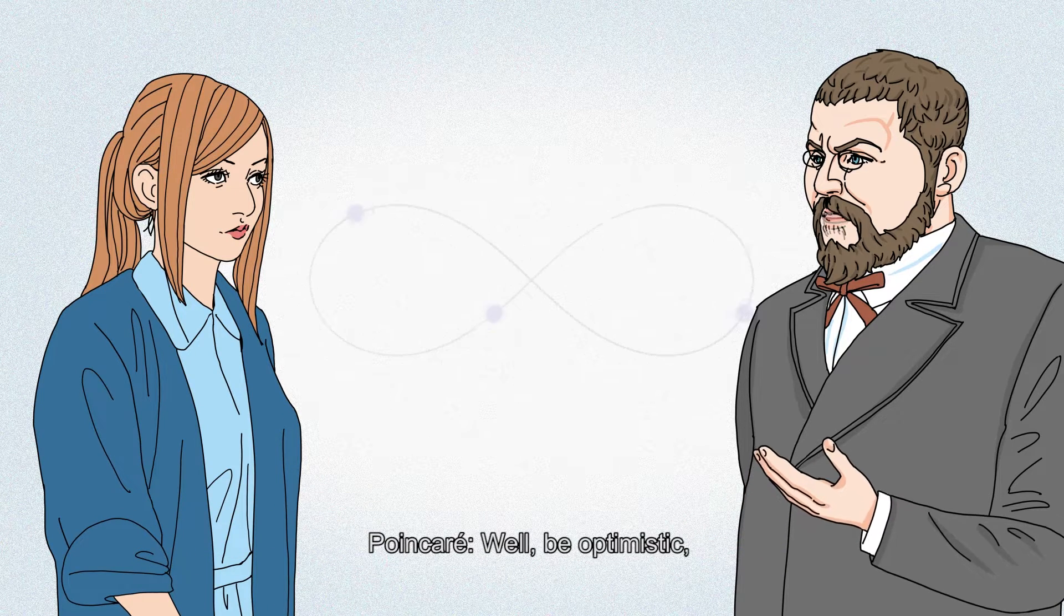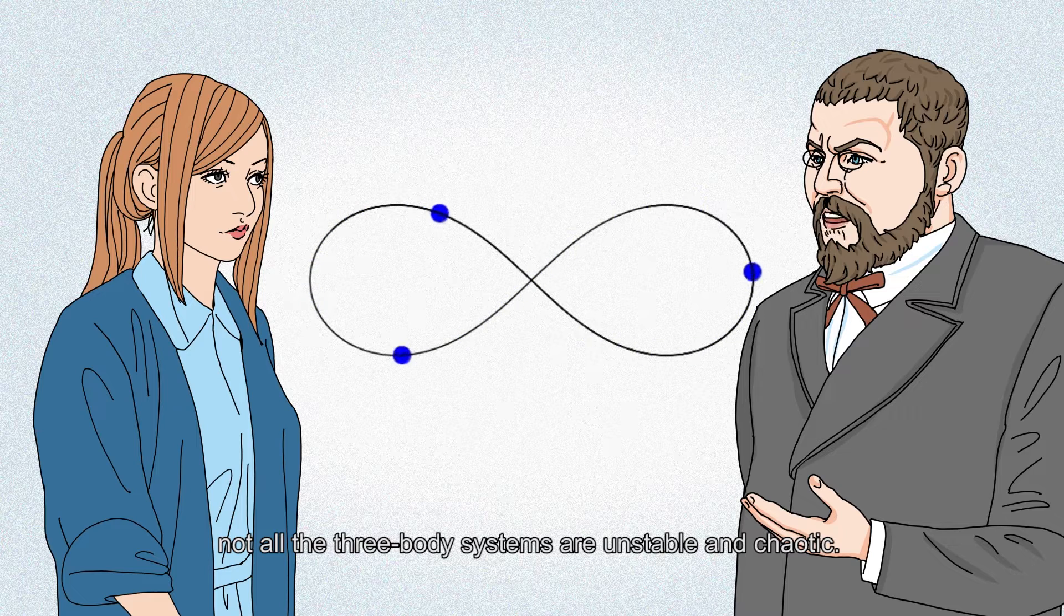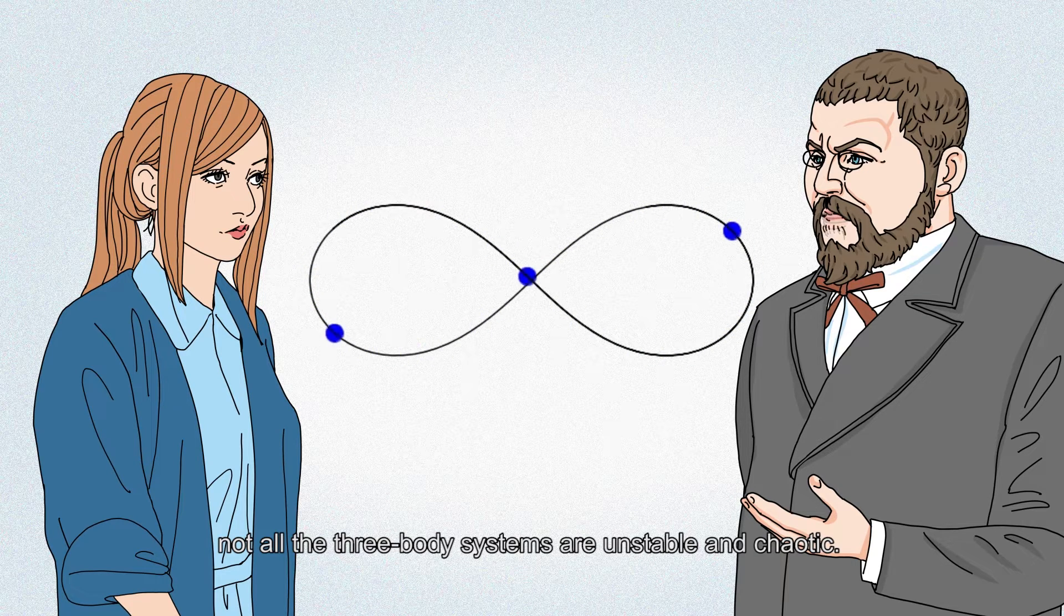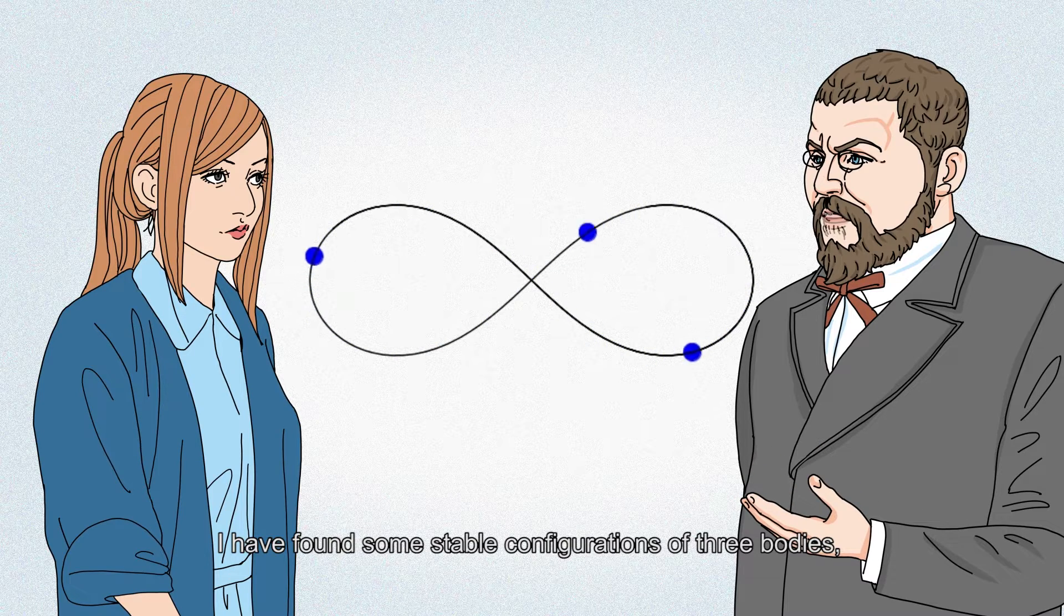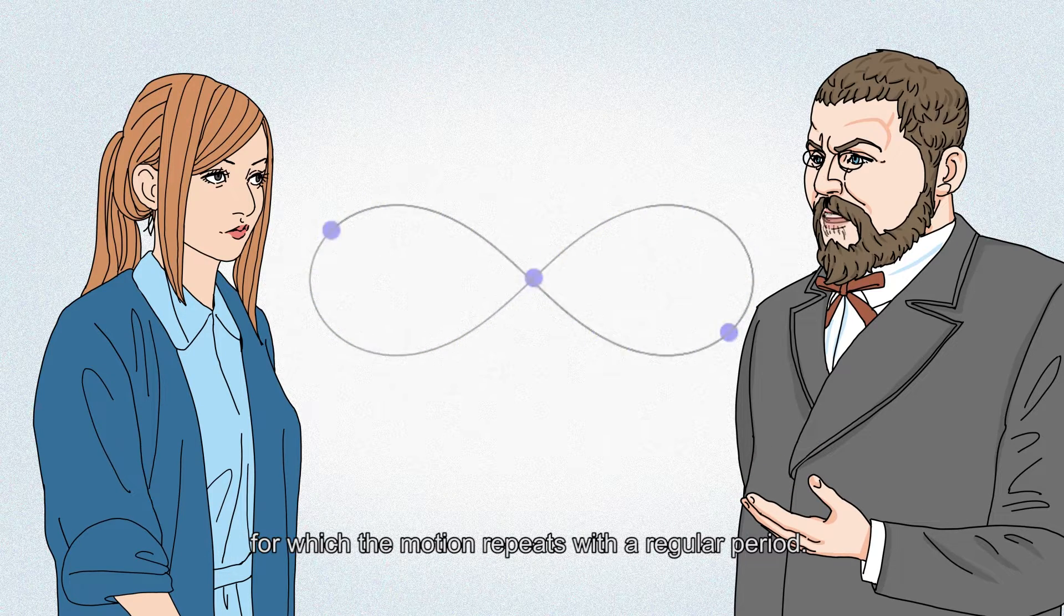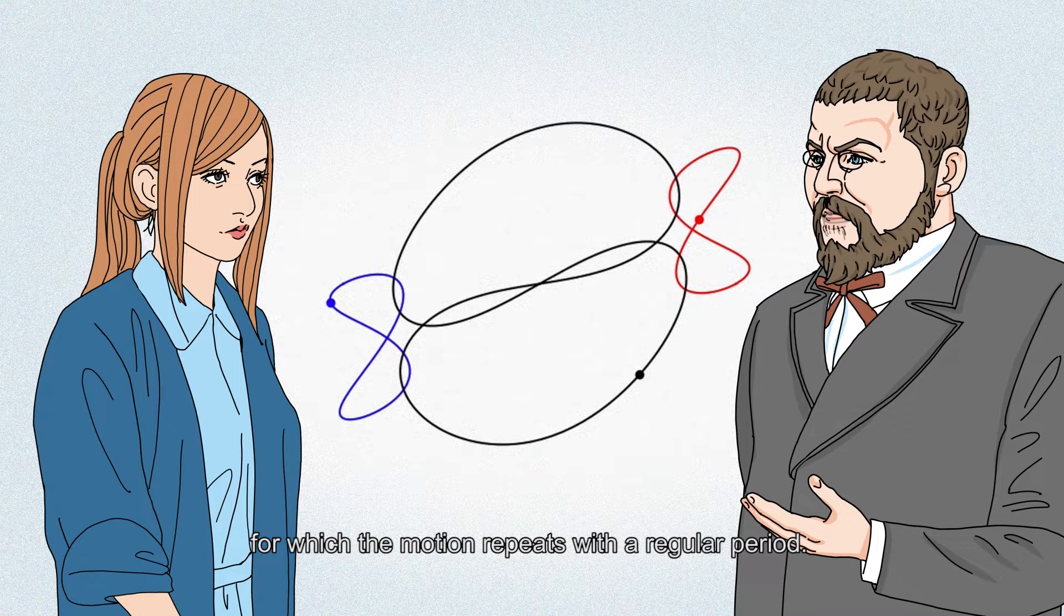Well, be optimistic, not all the three-body systems are unstable and chaotic. I have found some stable configurations of three bodies, for which the motion repeats with a regular period.